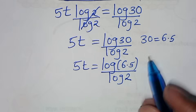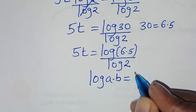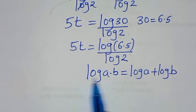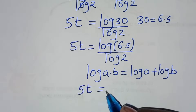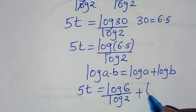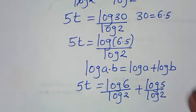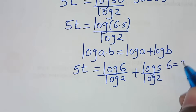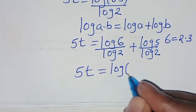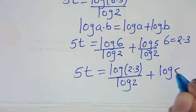Now log of 6 times 5 is in the form of log a times b, which we can express as log a plus log b. Applying this log product property, we have 5t equal to log 6 divided by log 2, plus log 5 divided by log 2. From here, we can express 6 as 2 times 3, so 5t equals log of 2 times 3, divided by log 2, plus log 5 divided by log 2.